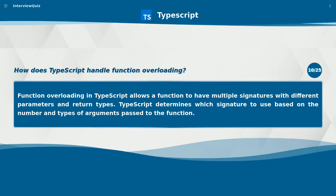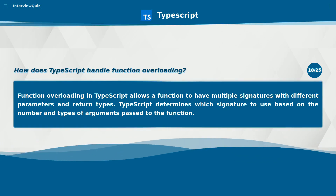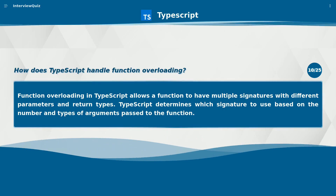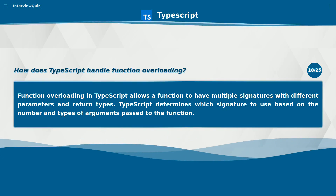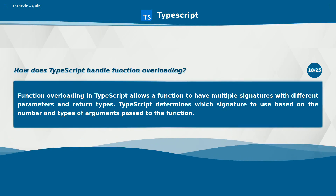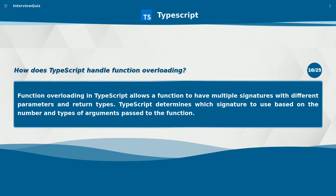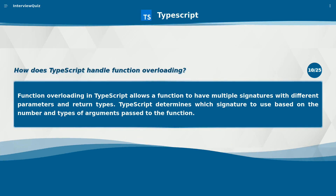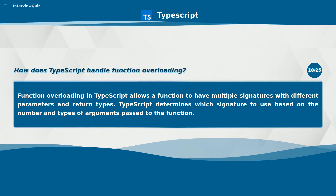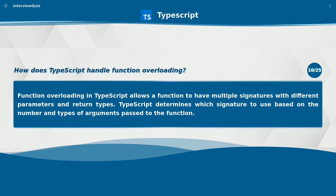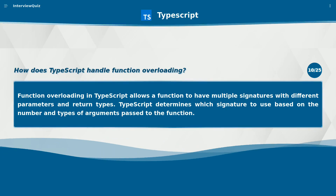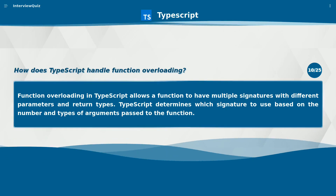How does TypeScript handle function overloading? Function overloading in TypeScript allows a function to have multiple signatures with different parameters and return types. TypeScript determines which signature to use based on the number and types of arguments passed to the function.